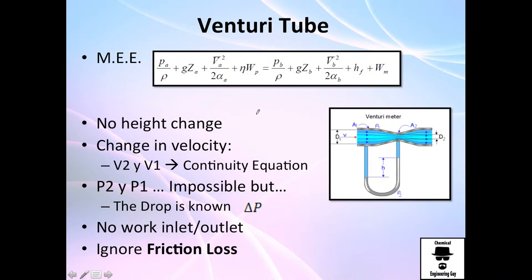We have the equation right here. Let's do a balance. This is letter B, this is letter A. There is no change of height, or at least not that strong. We have no pump, we have no work going out. The change of velocity, of course, there is.